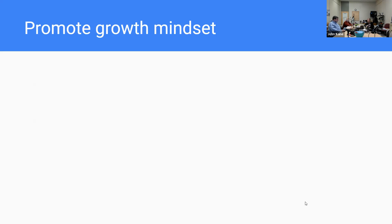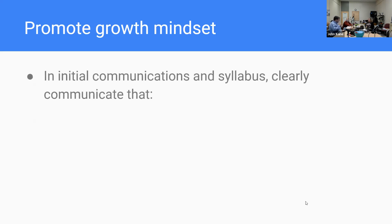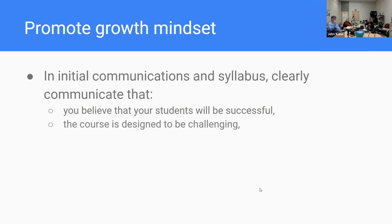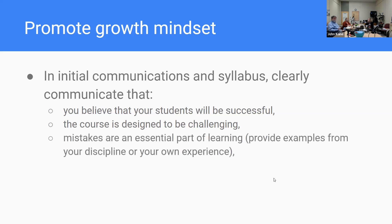Another thing you can do with announcements and messaging is promote a growth mindset — do this both in the syllabus, initial communications, and regularly throughout the class. Clearly communicate that you believe all students have the ability to be successful, and that the course is designed to be challenging. It's probably better to use the word 'challenging' rather than 'rigorous,' because rigorous has negative connotations, but challenge is positive. Highlight that mistakes are an essential part of learning, and assure students you'll give them the resources, opportunities, and time to be successful.